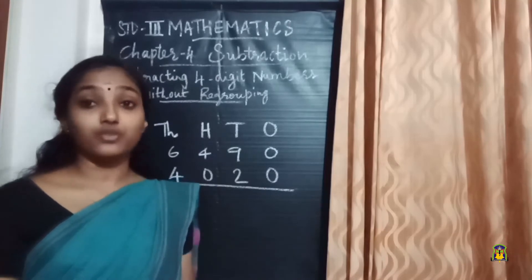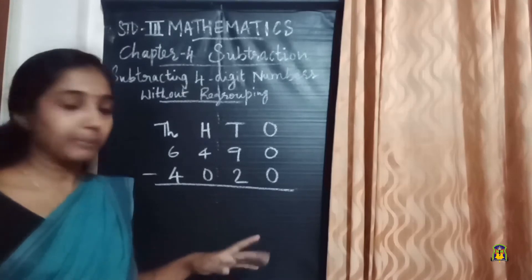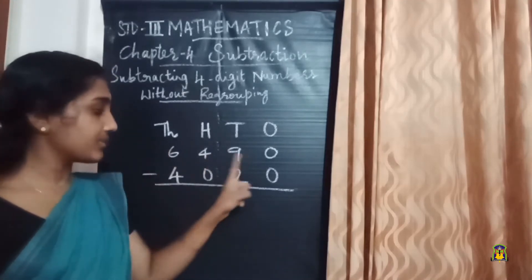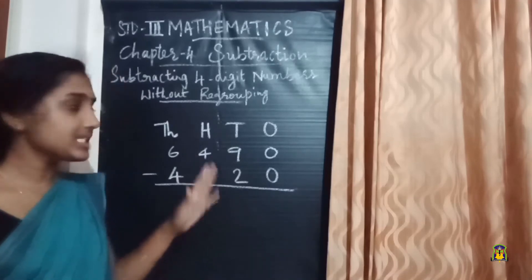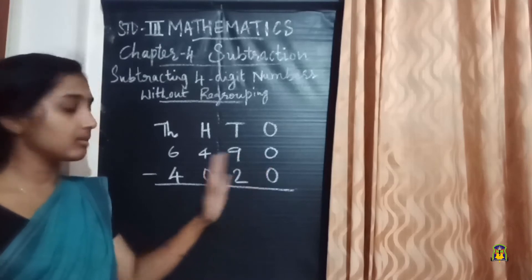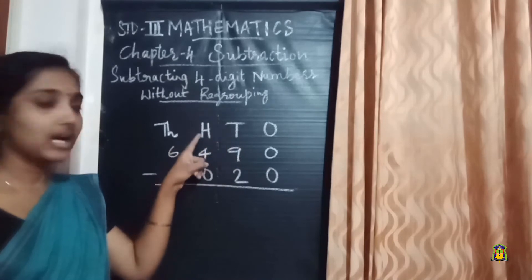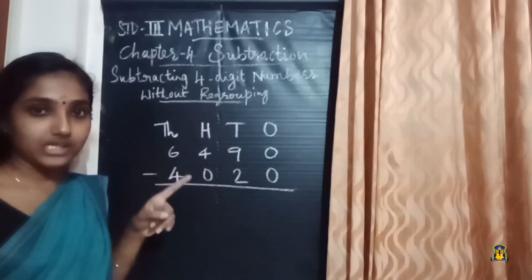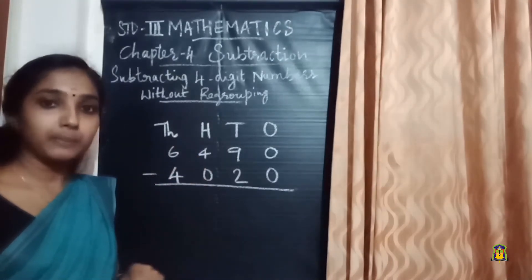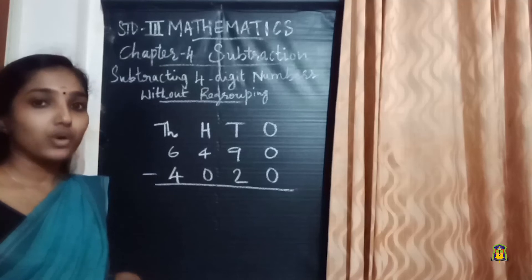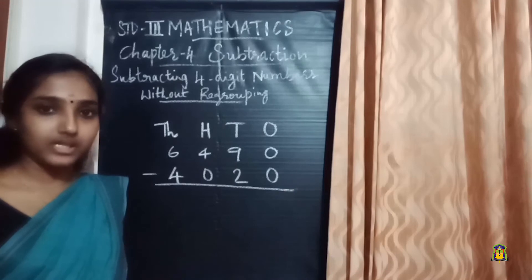Now let's move on to the subtraction of four-digit numbers without regrouping. We are given two numbers: 6490 and 4020, and we have to subtract them. I have arranged them in a place value chart. Both are four-digit numbers with places for ones, tens, hundreds, and thousands. We always start our operations from the ones place.